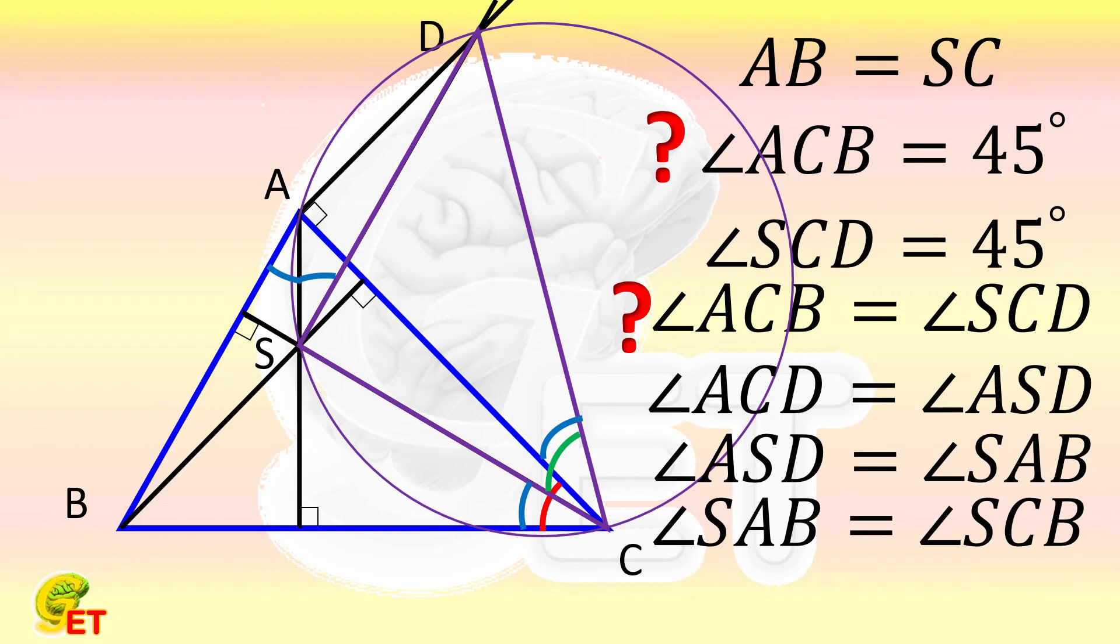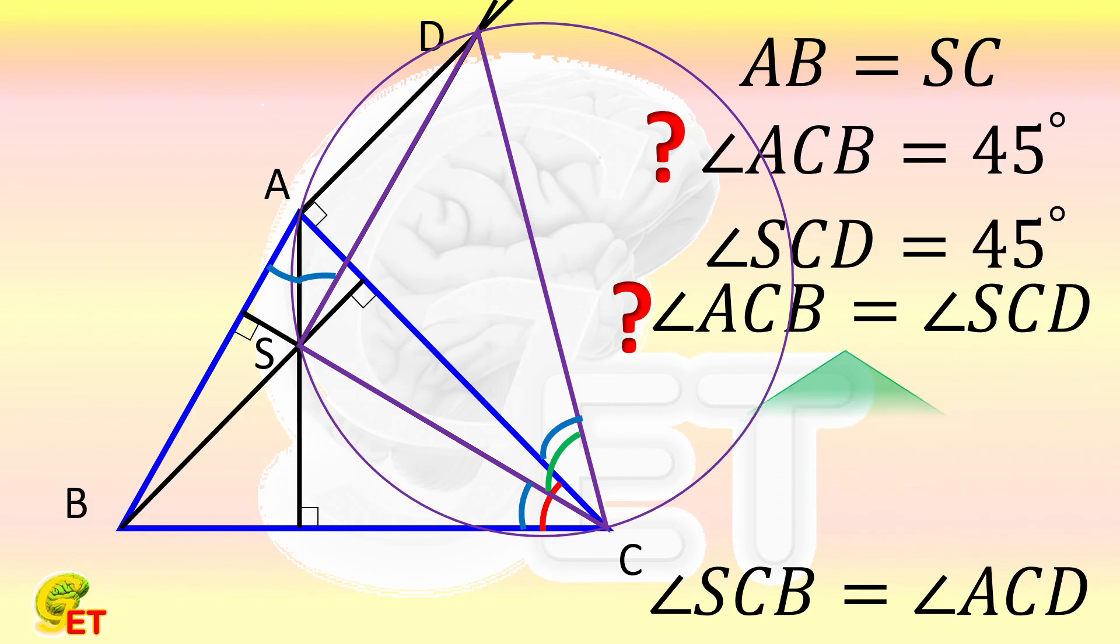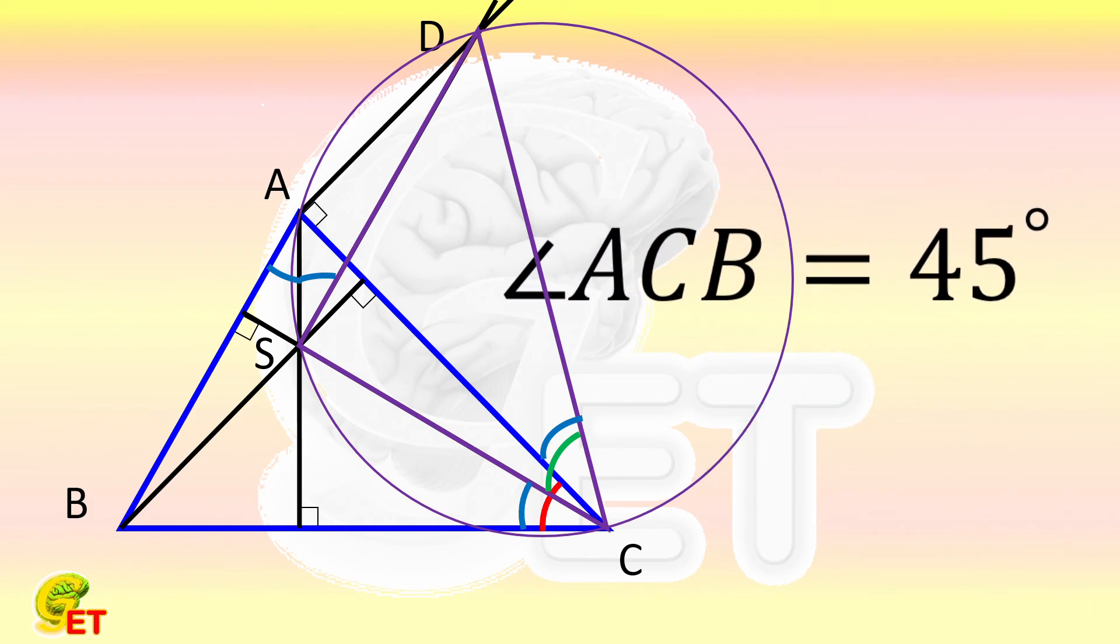So angle SCB is equal to angle ACD. Therefore, going all the way back, we obtain that angle ACB is equal to 45 degrees.